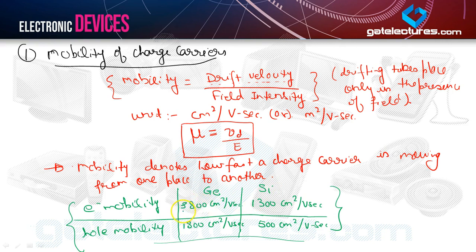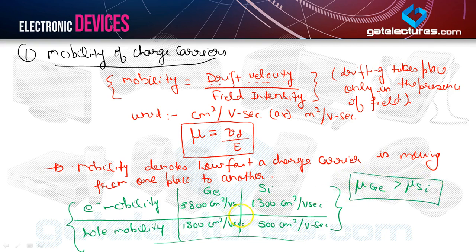The mobility of charge carriers in germanium is greater than that in silicon. This is an important point worth noting. I advise you to keep these values in mind. Whenever you encounter a question using charge mobility values, they will usually be given in the question, but it is worth remembering them.